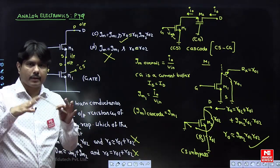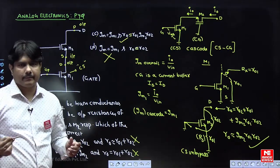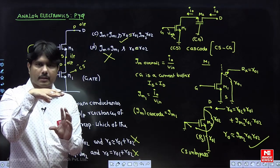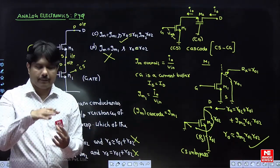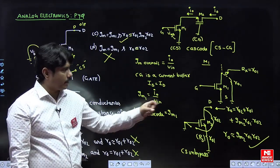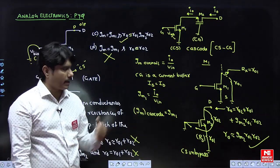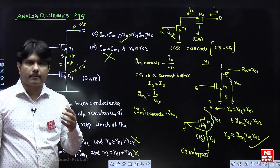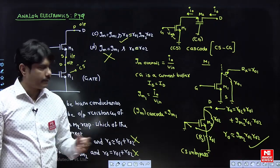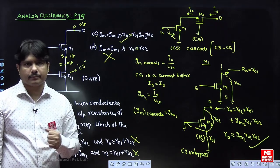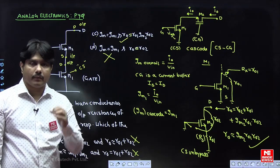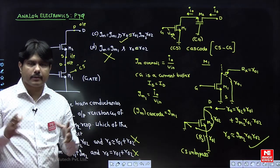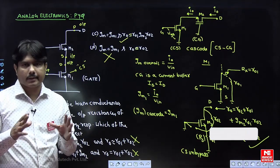Whenever two transistors are given, do not write AC models in GATE exams — it is time-consuming. Use the trick: replace the bottom transistor M1 with R01 (since looking from the drain gives R01), which converts the circuit to a common source unbypassed circuit. Apply the output resistance formula to finish the answer. For a cascode system: overall GM equals GM1, and output resistance equals GM2·R01·R02 — which is very high, typically in the megaohm range. That is why cascode systems have very high output impedance, and why cascode current mirrors use this type of circuit.